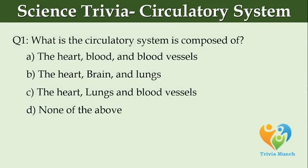What is the circulatory system composed of? Option A: the heart, blood, and blood vessels. Option B: the heart, brain, and lungs. Option C: the heart, lungs, and blood vessels. Option D: none of the above.